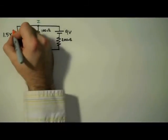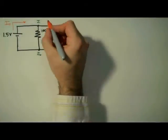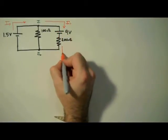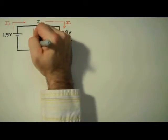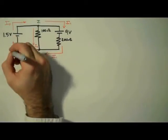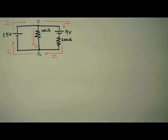Next we label our currents. I'm going to label this current I0. After junction 1, I'll have I1 on the right leg. Note that I0 does not pass through junction 1. This middle leg will be I2. And when I1 and I2 rejoin, we have I0 because the current coming out of that 1.5 volt battery needs to be the current coming back in.